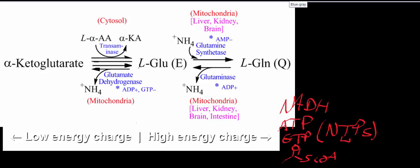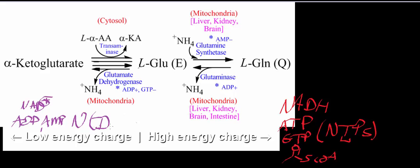Now, what things are associated with low energy charge? Those are basically the opposites of those molecules — things like NAD+, adenosine diphosphate, adenosine monophosphate, and in general your nucleoside di- and monophosphates. And sometimes coenzyme A is also considered a low energy charge molecule.